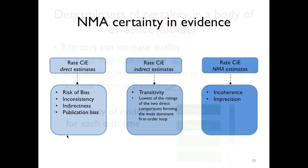Similar to meta-analysis, it is important to assess the certainty of evidence in network meta-analysis (NMA). To assess the certainty of evidence in NMA, the GRADE working group has developed a framework where, through three steps, researchers should rate the certainty of evidence of different pieces of information.